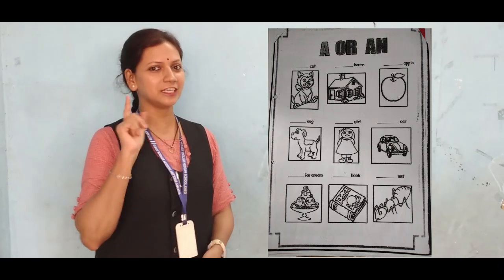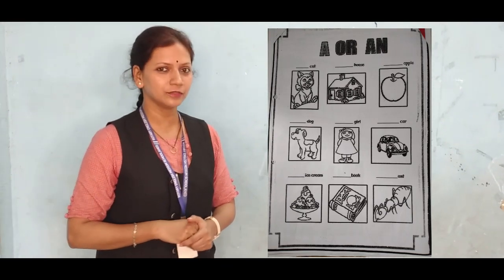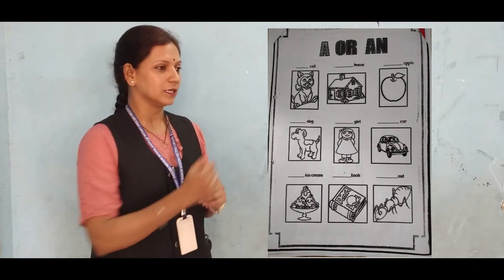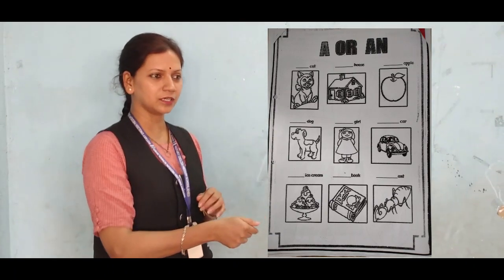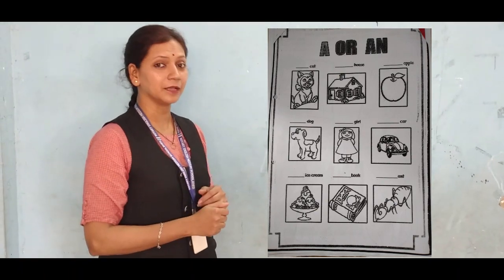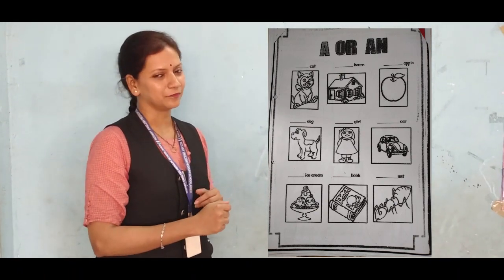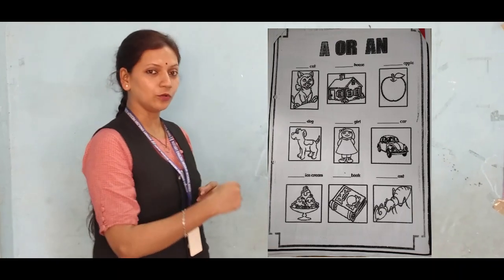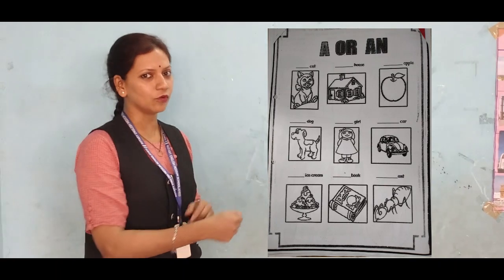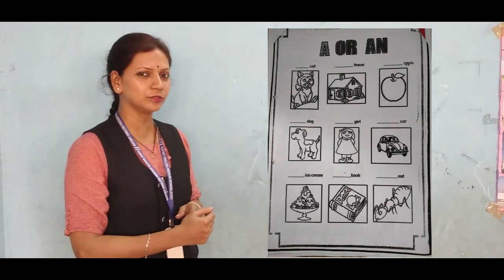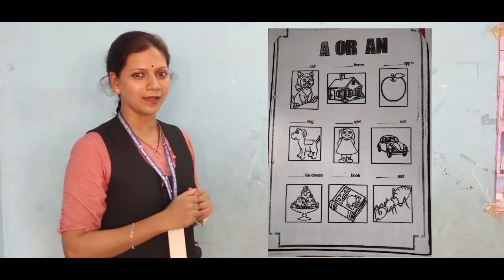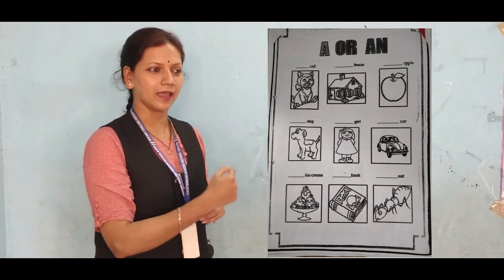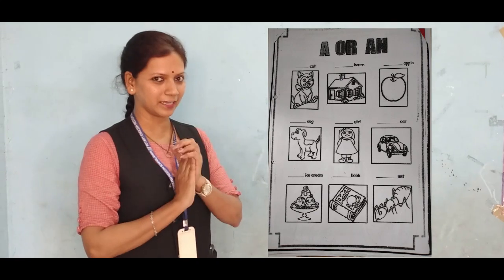Next question is for Arjun. Are you present? Now you have to answer. See the next picture — which picture is this? This is ice cream. Do you like ice cream? I like it so much! Ice cream — I is a vowel. So what will we use here, Arjun? Exactly — an ice cream. Very good.